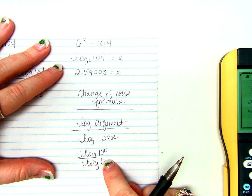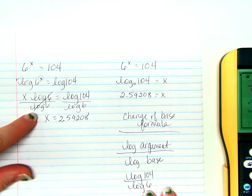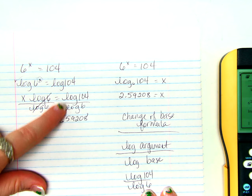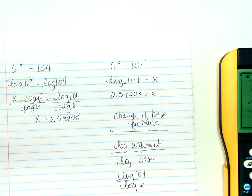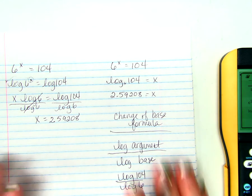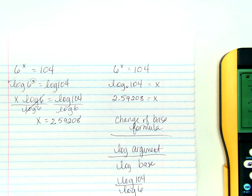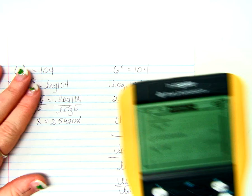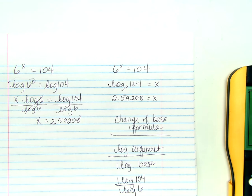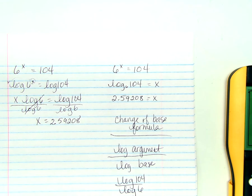Now, that might seem familiar to you, because when I did it this way, when I took the log of both sides, guess what I ended up doing? The log of 104 divided by the log of 6. So really, depending on which way you prefer, and depending on what resources you have, is how you'll do a problem like this. Let's do another problem.